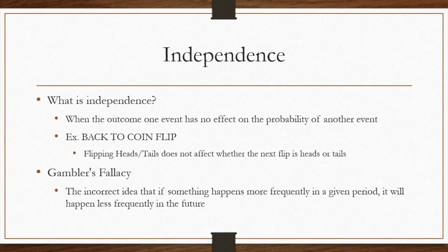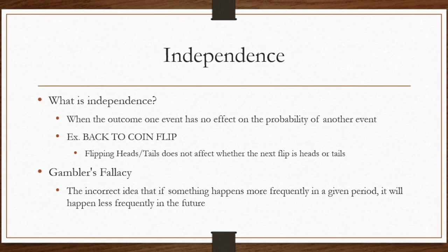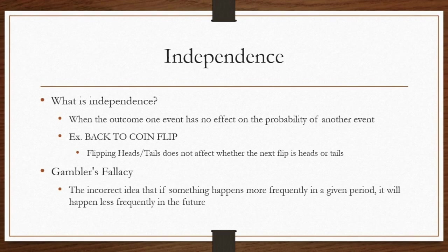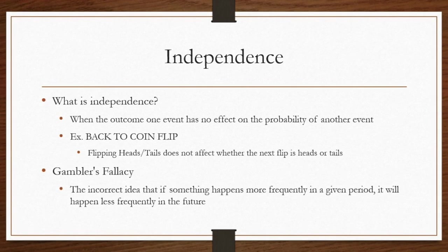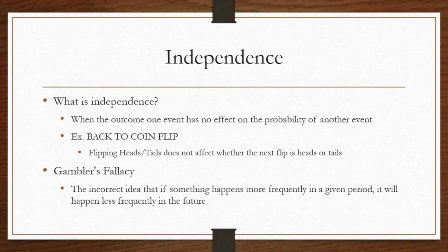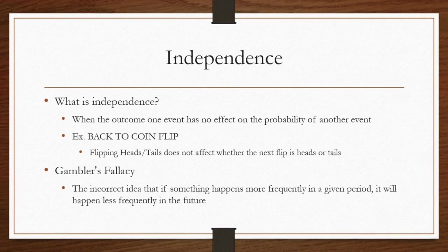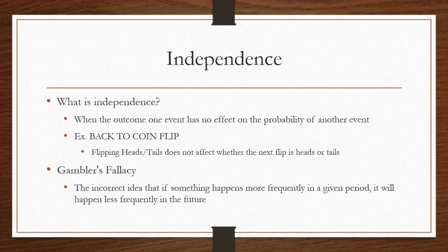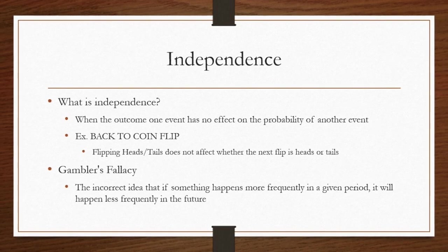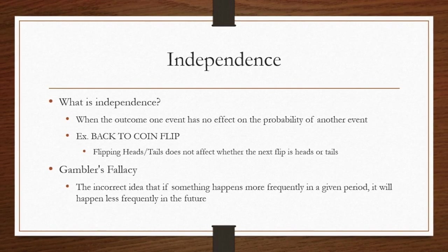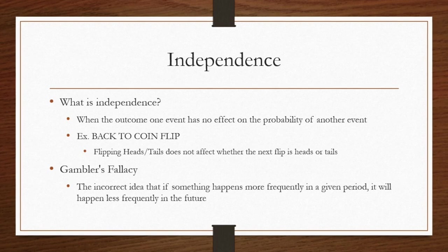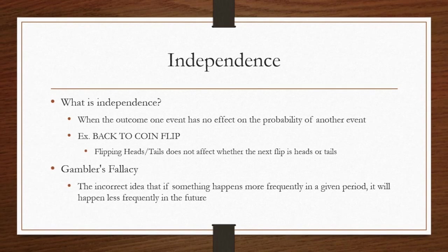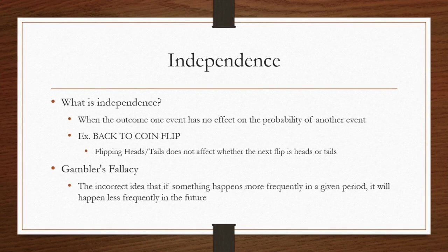So what does independence relate to when you're at a casino? A common misconception is that the more you lose, the more likely you will win. This is commonly known as the gambler's fallacy, or the Monte Carlo fallacy. When you're on a severe losing streak, people often believe that previous failures will create an increased probability of success on future attempts. This goes back to the definition of independence because past events do not change the probability that certain events will occur in the future.